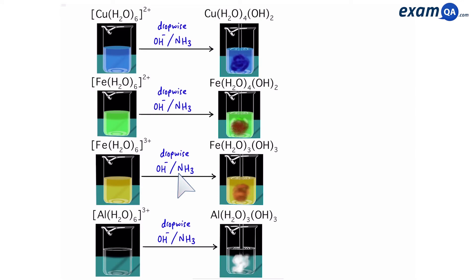Alternatively, we could continue going forward. Notice that we said that these precipitates are all basic, meaning they will not react with any more hydroxide or ammonia. But let's see exactly what happens. So let's start with the green one.